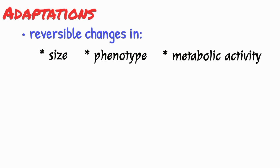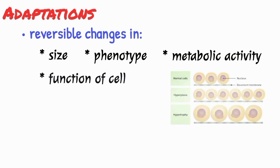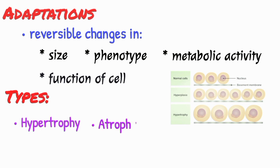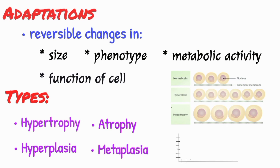Adaptations are reversible changes in size, phenotype, metabolic activity, or function of cells in response to changes in their environment. The types of cellular adaptations include hypertrophy, atrophy, hyperplasia, and metaplasia. Now, we will discuss them in detail one by one.